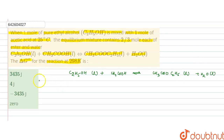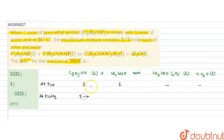At time t = 0, initially one mole of ethyl alcohol and one mole of acetic acid are present; ester and water are nil. At equilibrium, x moles of ethyl alcohol and x moles of acetic acid dissociate, so x moles of ester and x moles of water are formed. It is given that the equilibrium mixture contains 2/3 mole of ester and water, so x = 2/3.